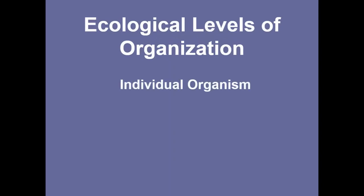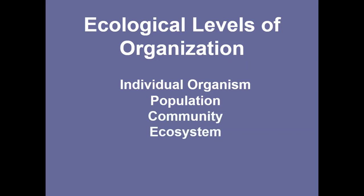So, ecological levels — this is how we organize them. We start with the smallest, most specific part of ecology: the individual organism. We put all those individual organisms into a population, and many different populations make up a community. Many communities, plus their abiotic and biotic factors, make up an ecosystem. A biome is lots of different ecosystems combined, and then many biomes make up the whole biosphere — the whole area where all living things exist on Earth.